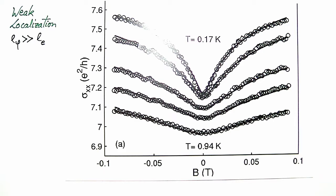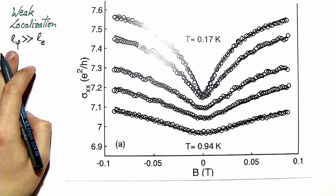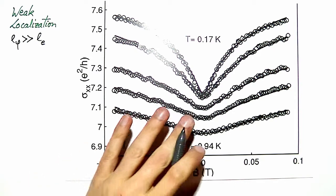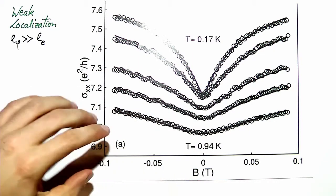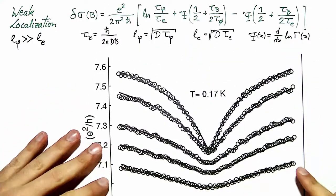With help of this data we can compute both the coherence length and the elastic mean free path. If we had access to the raw data, the most precise method would be to fit the data to a model of the weak localization correction, which is obtained with quantum field theory methods given by this equation here.